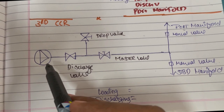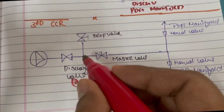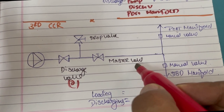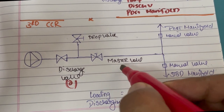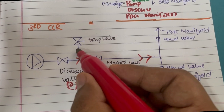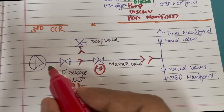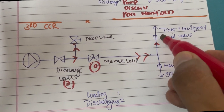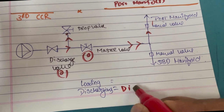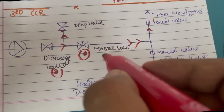For the third type of CCR: for discharging, start the pump, open the discharge valve, cargo flows, then open the master valve — sometimes called 'line master' or 'main valve.' The cargo flows through. The drop valve is shut so cargo will not pass through it. Open the port side manifold valve and proceed with discharging. So here: start pump, open discharge valve, master valve, and manifold valve.